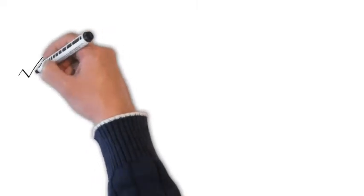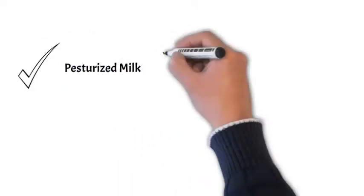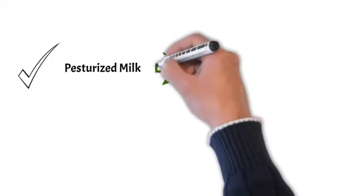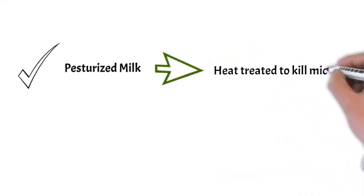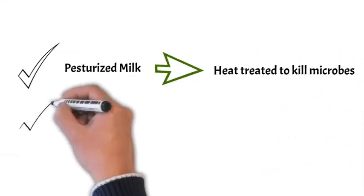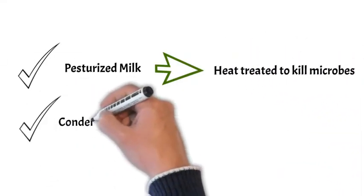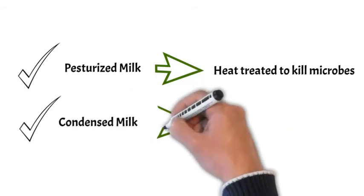Next is pasteurized milk, in which the milk is treated at higher temperature to kill the microbes. And the last type of milk is condensed milk, which is a dehydrated form of milk.